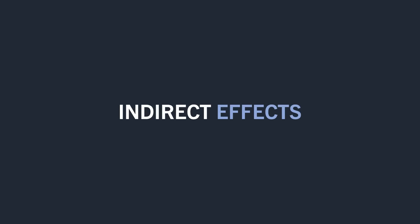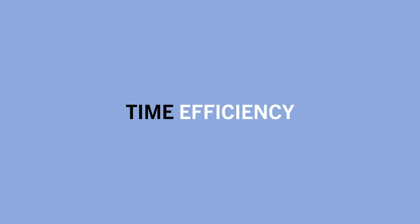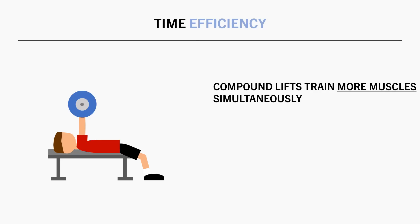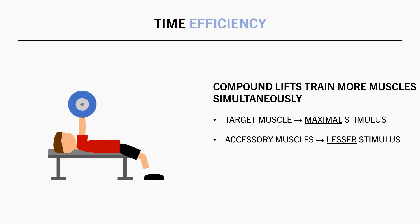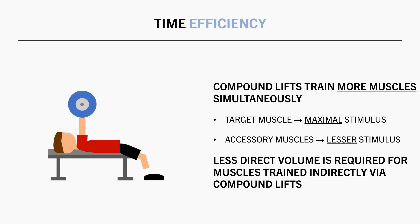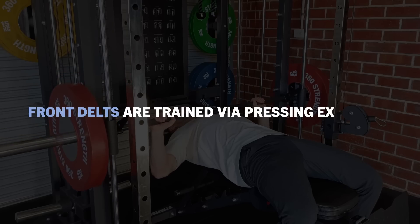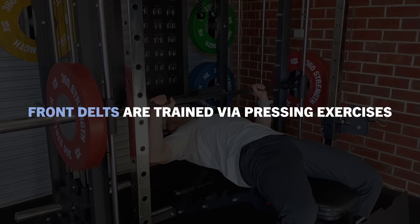It is also important to consider the indirect effects of compound versus isolation lifts. The first indirect effect is time efficiency — a unanimous win for compound lifts. Compounds train more muscle groups simultaneously, meaning we will probably achieve superior overall muscle growth on a per-set basis. While only one muscle group will be the true limiting factor of each set, even the smaller stimulus to accessory muscles means we may not need to allocate as much volume to them. A common example is the front delts, which get trained quite heavily via compound pressing movements, so many lifters may not need much, if any, direct front delt work.